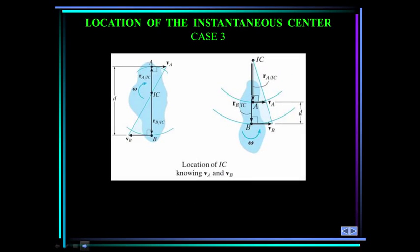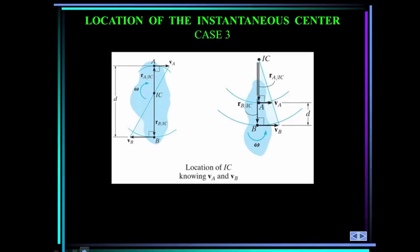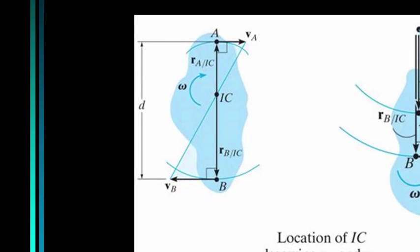The third case is when the magnitude and direction of two parallel velocities at A and B are known. Here we use proportional triangles to locate the instantaneous center. In this case, the body is rotating with some omega. The velocity of A and the velocity of B are both known but they're parallel. We can just construct this diagram, and by similar triangles we can determine what the instantaneous center is.